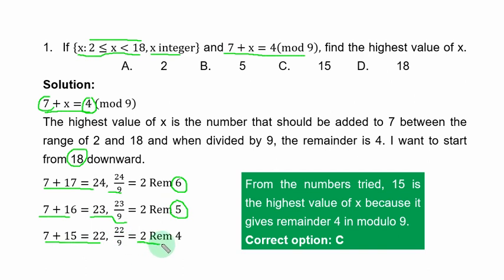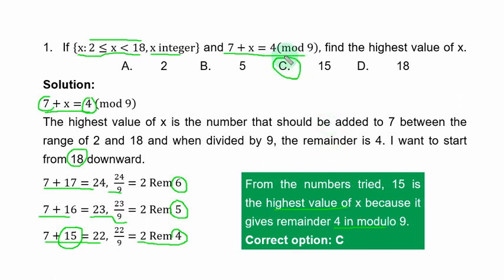The number 15 gives a remainder of 4 after the addition and division, so 15 is the highest value of s that satisfies 7 + s ≡ 4 (mod 9). The correct option is C.